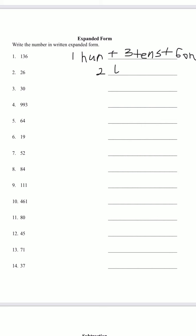So we have two tens plus six ones. Number three, we have 30. So three tens. And we don't have any ones because it ends with zero. Okay? So it's just three tens and zero ones.